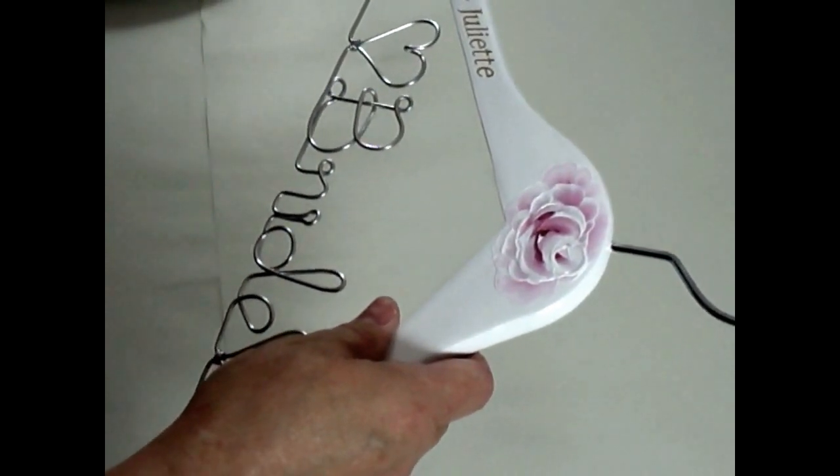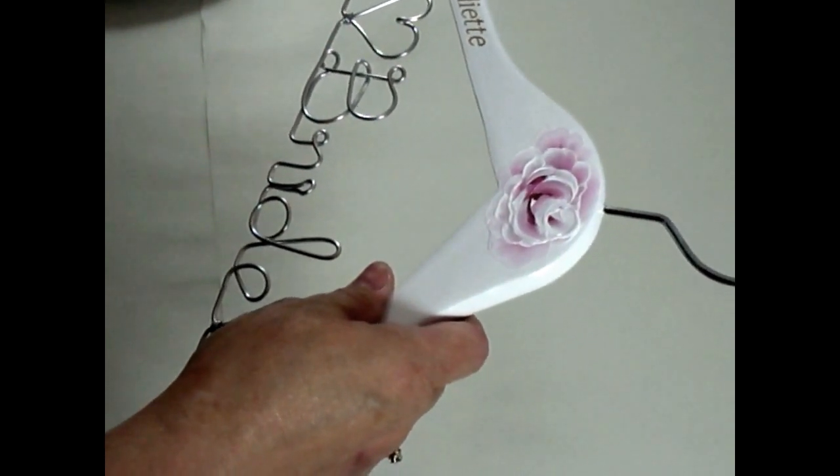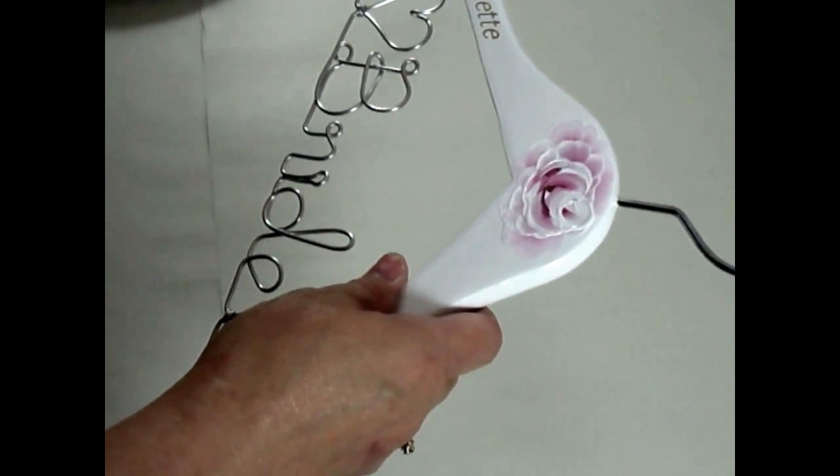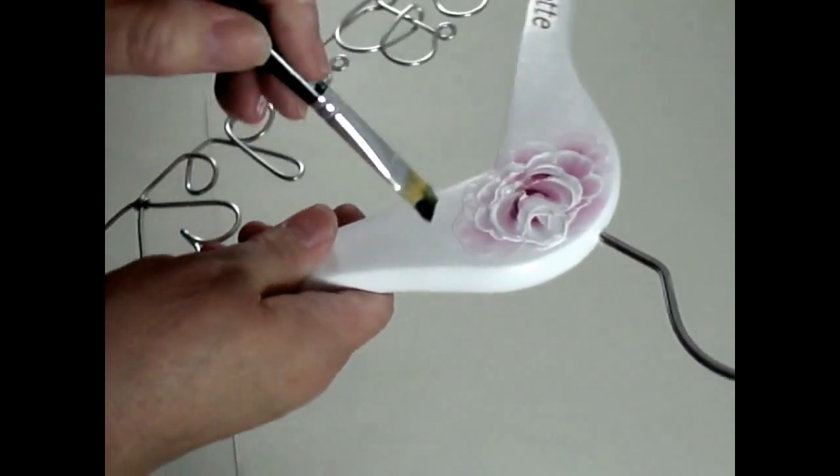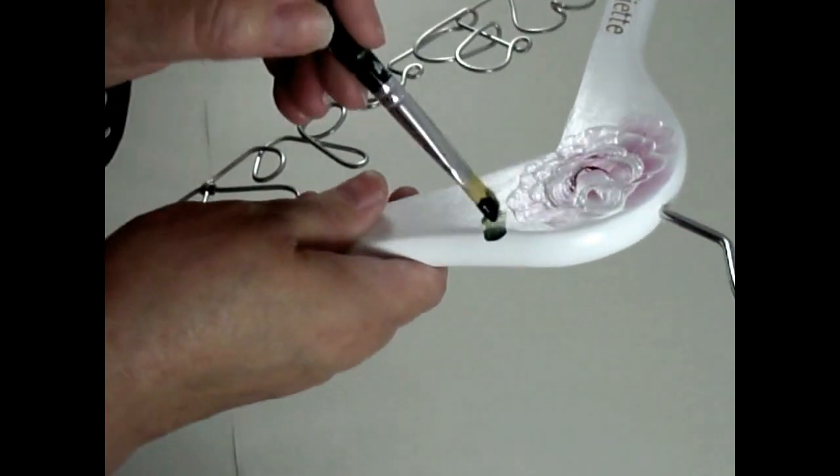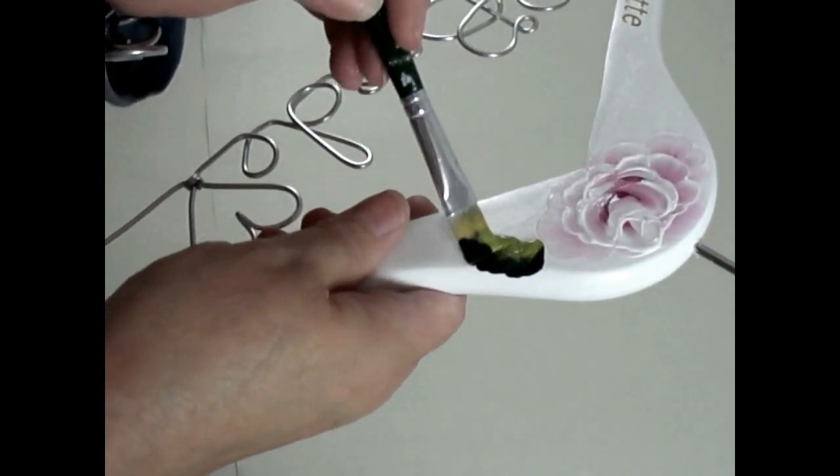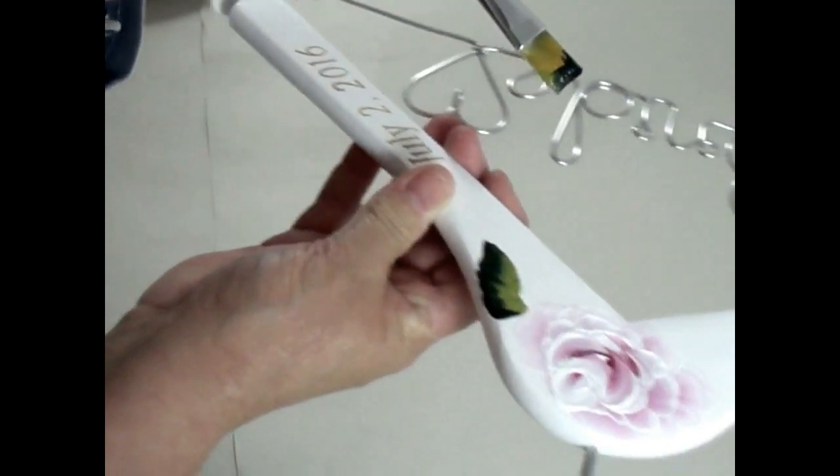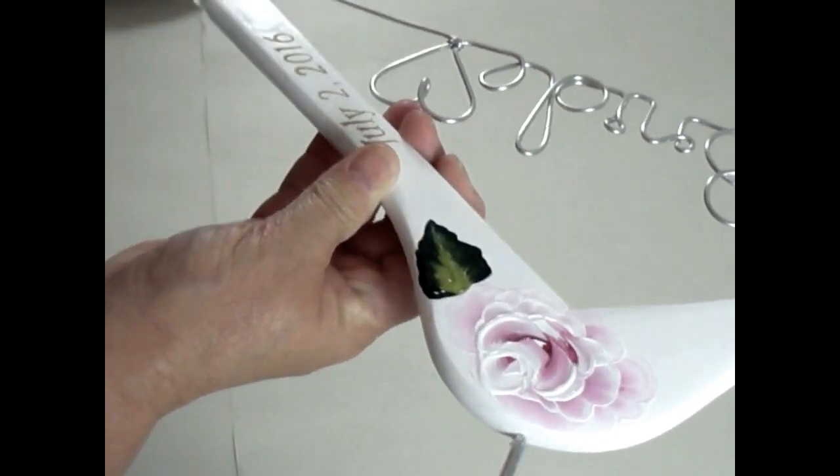And then once I'm done with that, I'm going to add just a couple petals. I have to be honest with you, I really like to use Thicket, the color Thicket, for my leaves. But unfortunately there was an issue with getting that color delivered to me, so I'm pretty much making my own, mixing my own color.